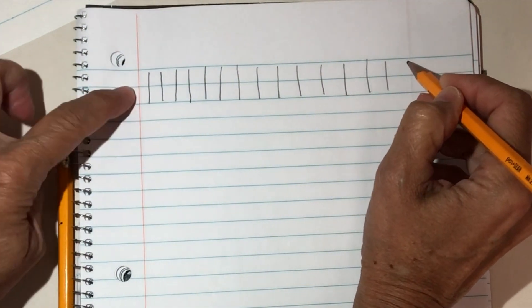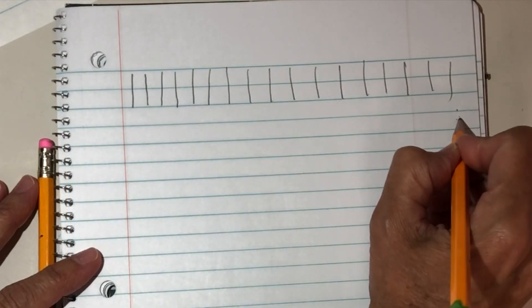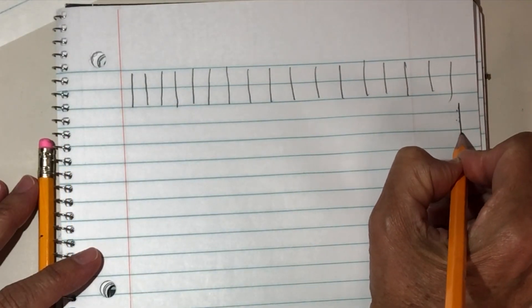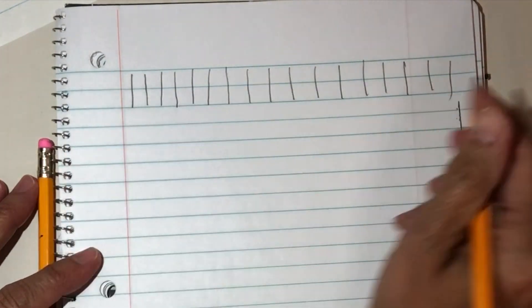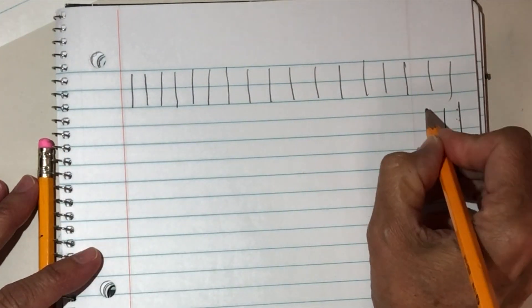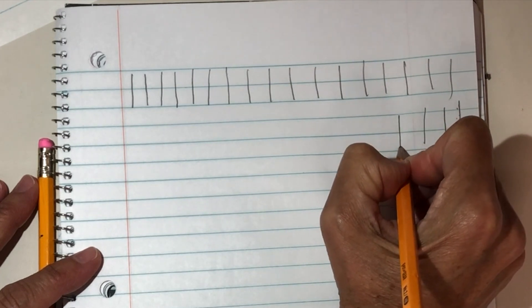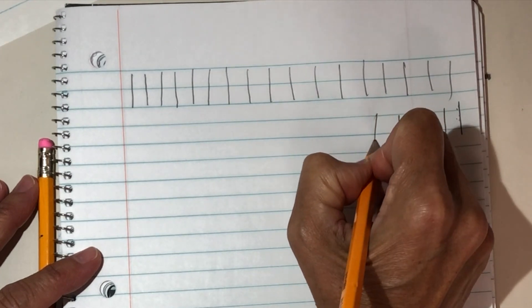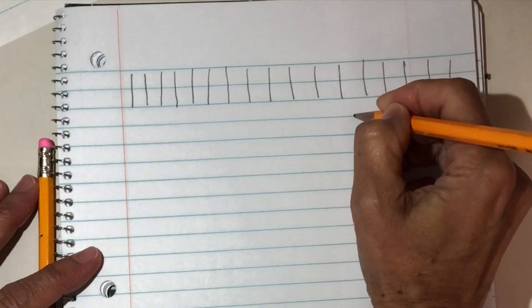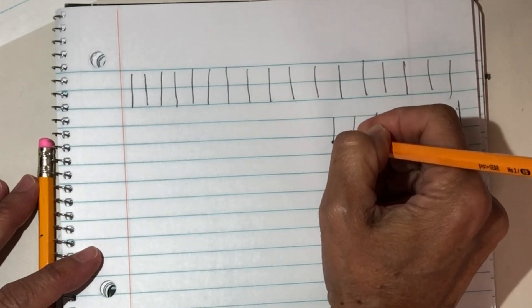From left to right, start on this side of the paper and go that way from right to left. Okay, now we're gonna go the opposite way. Pull the pencil down.